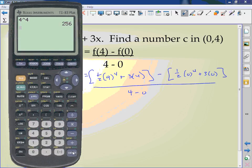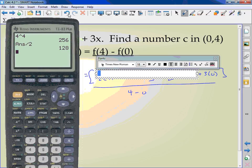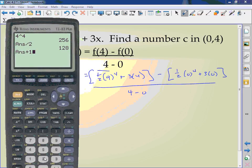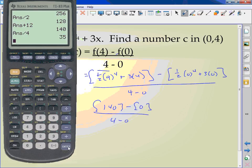Four to the fourth is 256. Plus in half, so that's 128 right here. And three times four is 12. So I have 140 minus zero over 4. So I have 140 divided by 4, and I get 35.